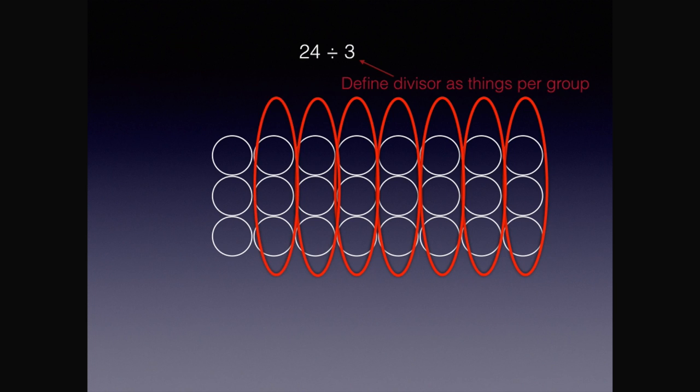When you look at the groups, they will make a rectangle. All rectangles from side to side with a length of 3 counters long and 8 counters wide. Therefore, 24 divided by 3 equals 8 groups of 3.